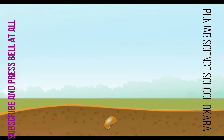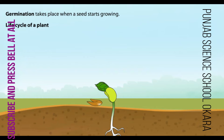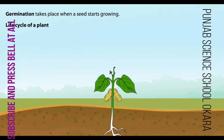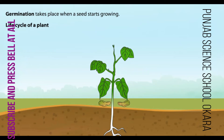Plants are living things. Just like we grow from babies to adults, so do plants. Germination is when a seed starts to grow into a plant. The process by which a seed becomes a fully grown plant is known as its life cycle.